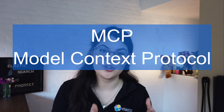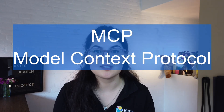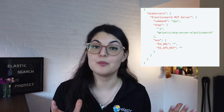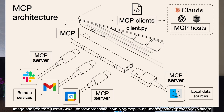MCP — Model Context Protocol — does pretty much what the name says: it provides the right context to your models and defines a protocol that is uniform, allowing you to create compatible agents and tooling that can all work together seamlessly. It's been described as the USB-C connector to the agentic world, allowing you to have a standardized way of using other people's tools and agents in a sort of marketplace.